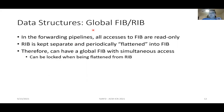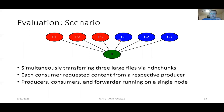We also have the global FIB and RIB. In the forwarding pipelines, all FIB accesses are read-only, and the RIB is kept separate and periodically flattened into the FIB. Therefore, we can have a FIB with simultaneous access as a global data structure, and simply lock it when we need to actually update it.